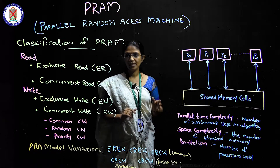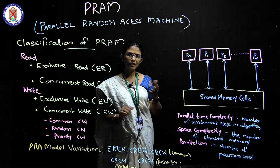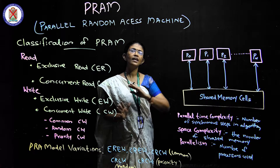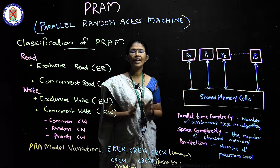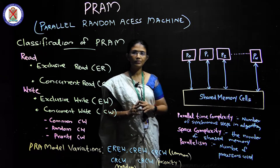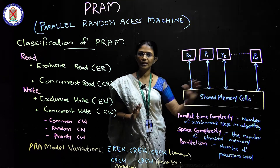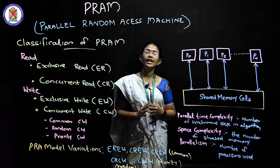So if you want to handle concurrent write conflicts, there are three options: Common — all processes write the same value; Random — a random processor is chosen to write; and Priority — processors are assigned priorities and the highest priority one writes.